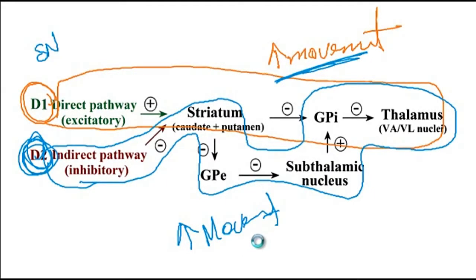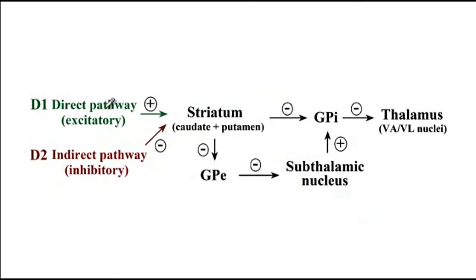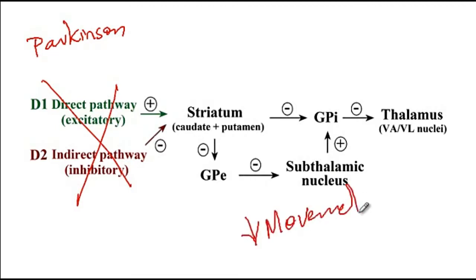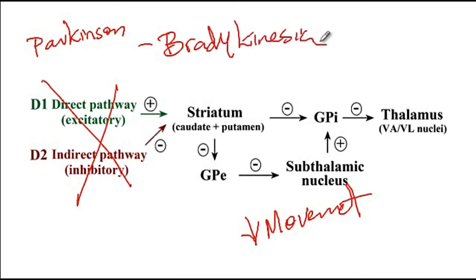If substantia nigra is destroyed, as in Parkinson's disease, dopamine is no longer produced and the dopamine receptors are not functioning. The direct pathway cannot be activated — we can no longer push the gas pedal — and the indirect pathway cannot be inhibited — we cannot stop pressing the brake. The result is decreased movement, which is why patients with Parkinson's disease present with bradykinesia, meaning slow movement.